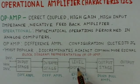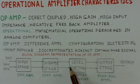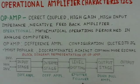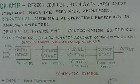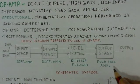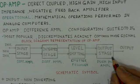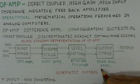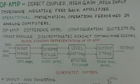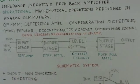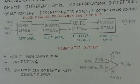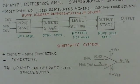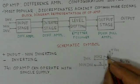The third stage is the level shifting stage, which provides level shifting and uses an emitter follower configuration. The last stage is the output stage, which can provide enough voltage and current capabilities and uses a push-pull amplifier configuration.